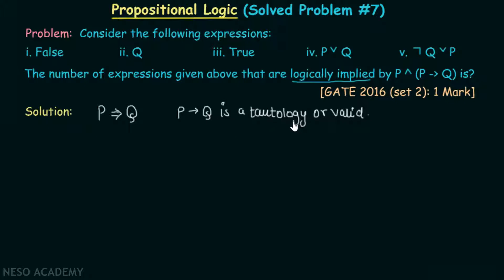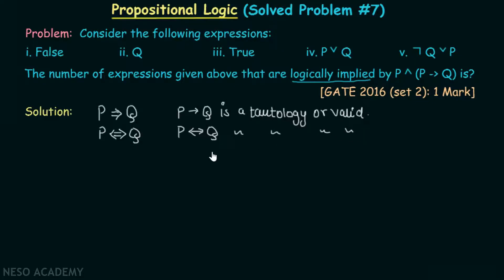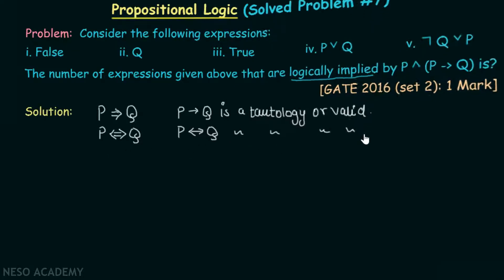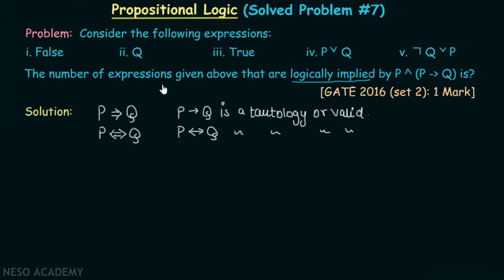If you remember logical equivalence: when we say p is logically equivalent to q, it simply means that p biconditional q is a tautology — or valid. This is something we already learned in previous lectures. Here we need to find out the number of expressions which are logically implied by the given expression.